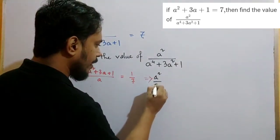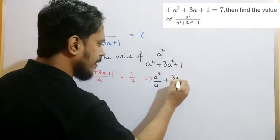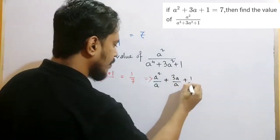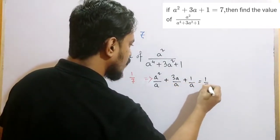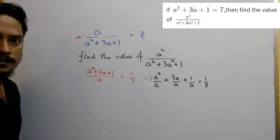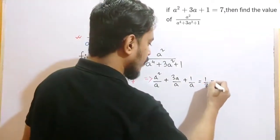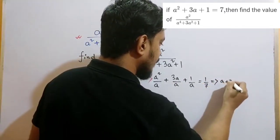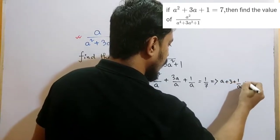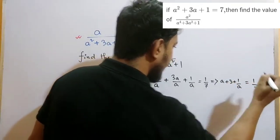a squared by a plus 3a by a plus 1 by a, which equals 1 by 7. Now from that part you can also write down a plus 3 plus 1 by a, which equals 1 by 7.